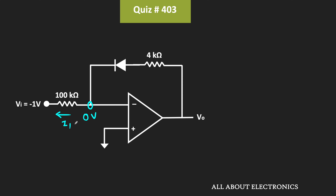Now, let's say the current flowing through the input resistor is equal to I1. This current I1 will flow from 0V to –1V, because current flows from higher voltage to lower voltage. Similarly, let's say the current through the diode is equal to I2. If we apply KCL at this node, then I2 should be equal to I1, because no current is flowing into the op-amp terminal.